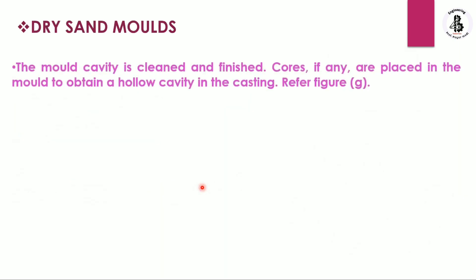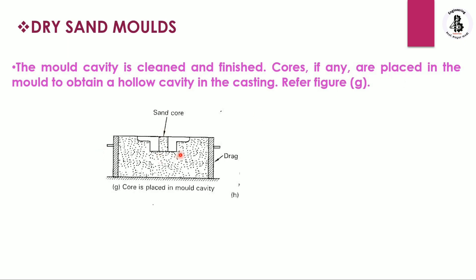After this, the mold cavity is cleaned and finished. Sometimes cores are required and are placed into the mold cavity for making hollow castings. A sand core is placed into the mold cavity — in this case a vertical core — as per the requirements of the hollow casting.